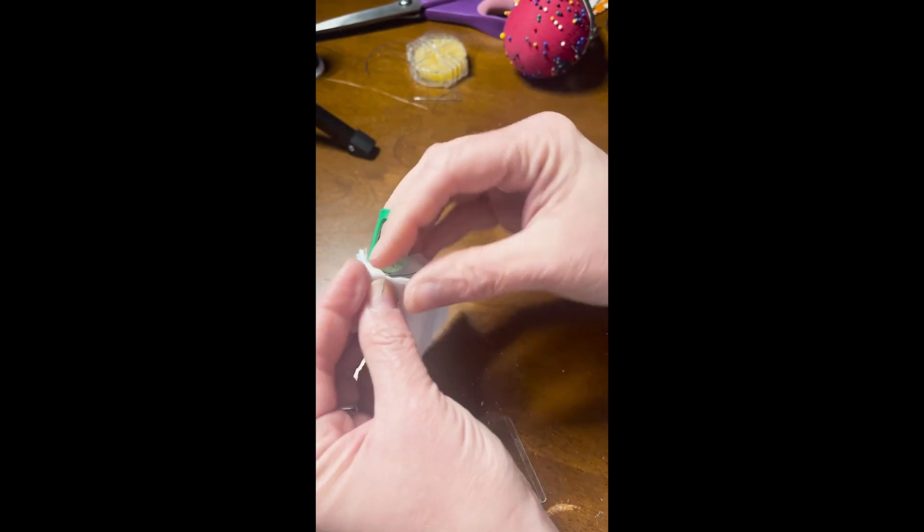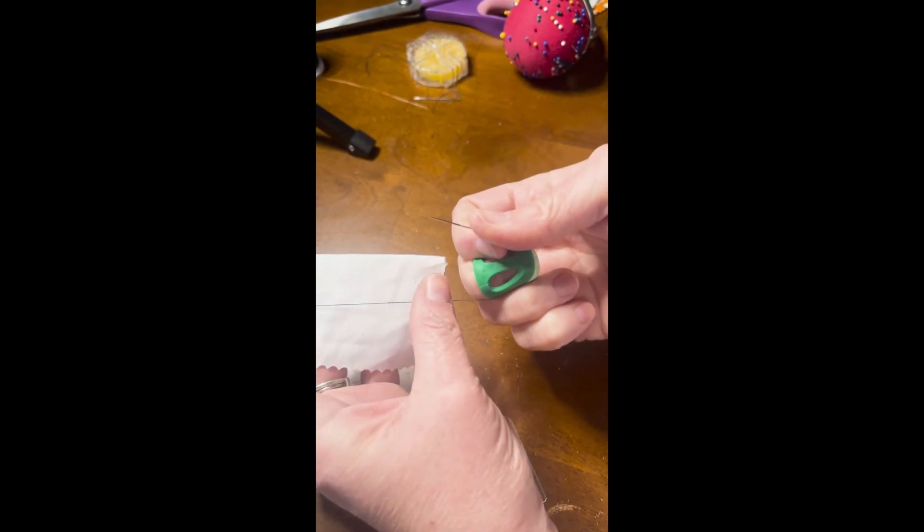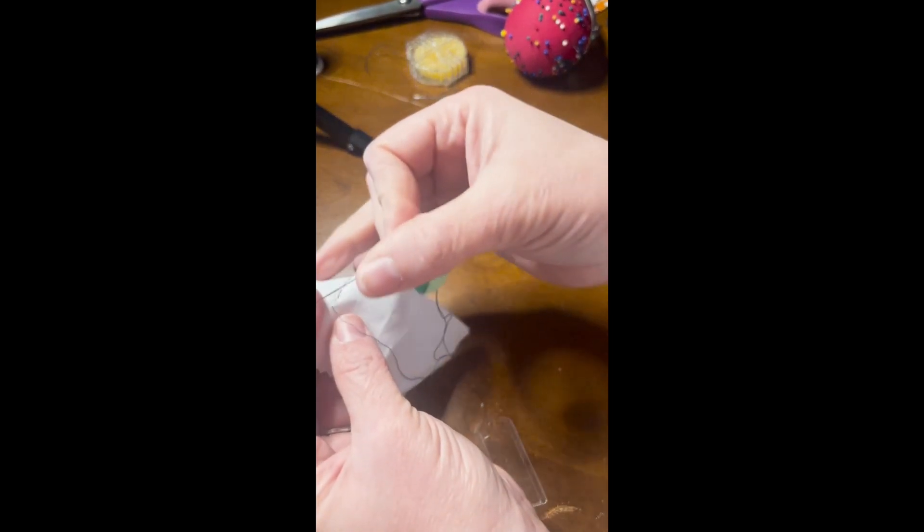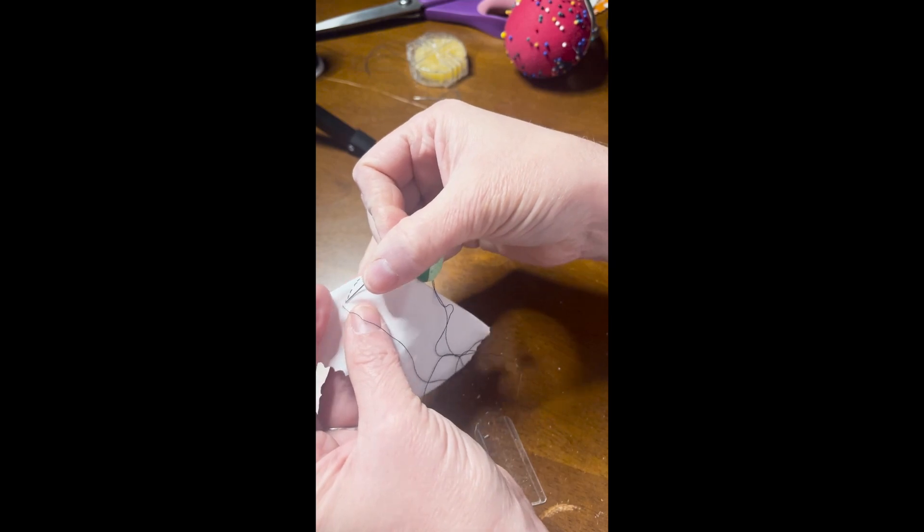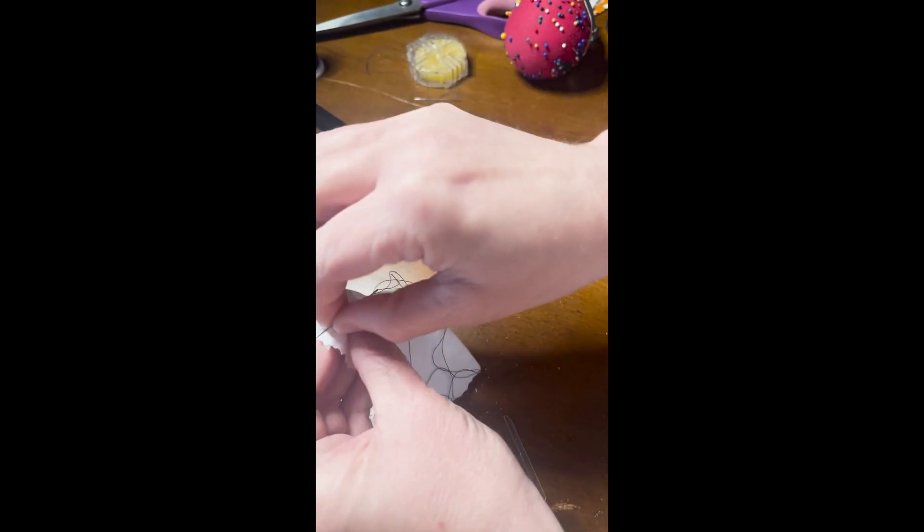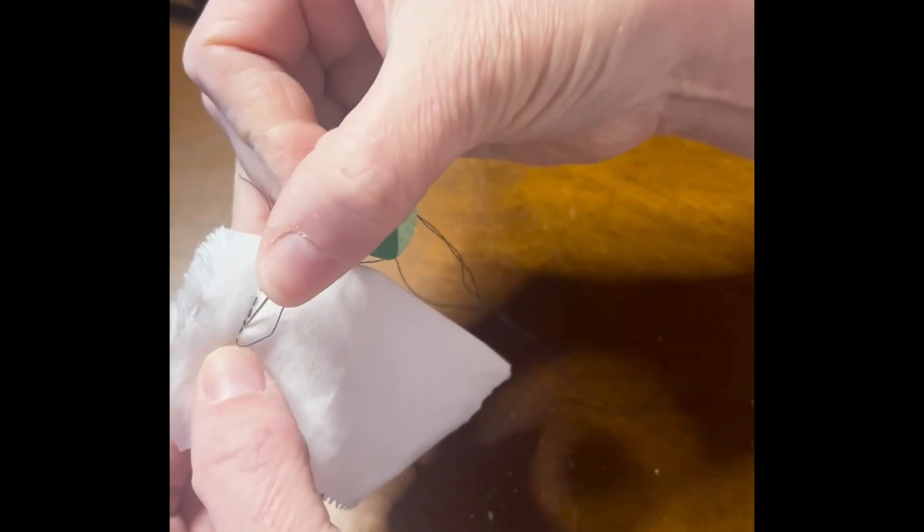So let's pretend that I ran out of thread. I have maybe four inches of thread left and I know that's not going to get me to the end. So I'm just going to make another knot just like I did at the beginning of my project. So you're just going to make a few stitches right in the same spot.